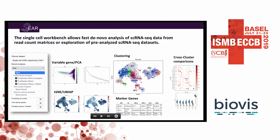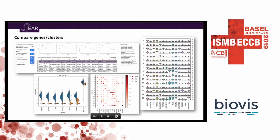We recently added a single cell workbench. You can start with raw data from CellRanger or something else, and it will guide you step-by-step through common analysis tasks like PCA, t-SNE, and UMAP for dimensionality reduction, clustering, and marker gene identification. You can view cross-cluster comparisons and compare genes across different clusters. For PCA and t-SNE, if you've done that in an analysis, you can toggle that as the view you see on the front page when comparing with other datasets.